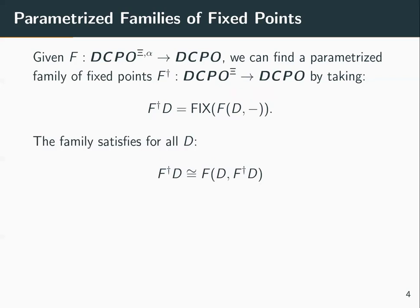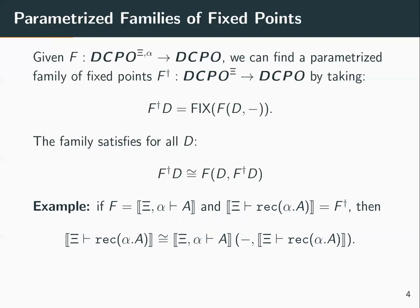This parametrized family of fixed points will respect unrolling. More concretely, if F is the interpretation of the open type A and we interpret the recursive type by F†, then we get exactly the unrolling identity from the previous slide.